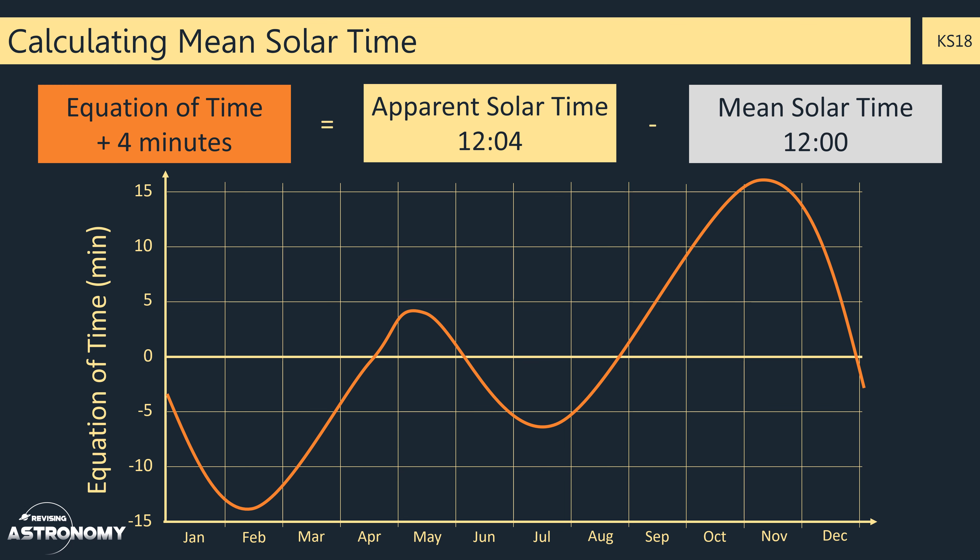Now if you took all of the values for the equation of time and plotted them on a graph, you'd get something that looks like this. And this allows you to find the equation of time for any day, and therefore you can correct your sundial reading to give you the correct time. So we can see that this example could have occurred on the 1st of May, as when the equation of time is plus 4, it coincides with the 1st of May. Alternatively, any of these other dates.